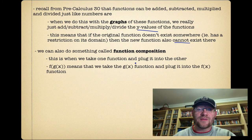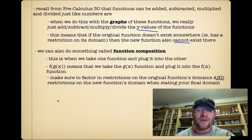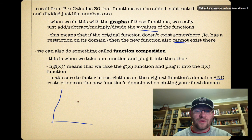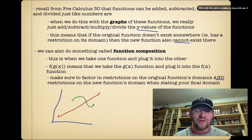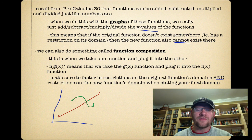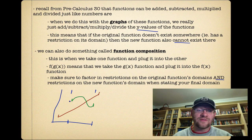f of g of x means that we take the g(x) function and plug it into the f(x) function. Make sure to factor in restrictions on the original functions' domains and the restrictions of the new function's domain when stating your final domain. For example, if we had a red function that's a line with a specific domain, and a green function with its own specific domain, then our new function — whether we're adding, subtracting, multiplying, dividing, or composing — cannot exist outside of where both domains exist. It'll be restricted to between the two boundary x-values of the more restrictive function.